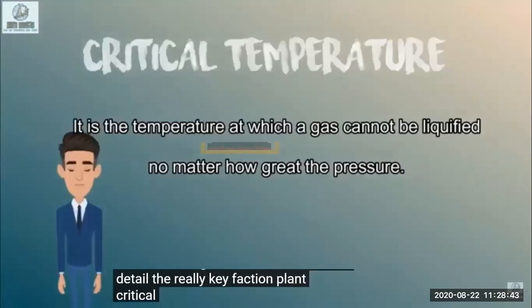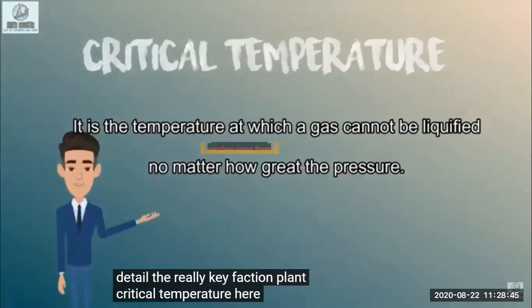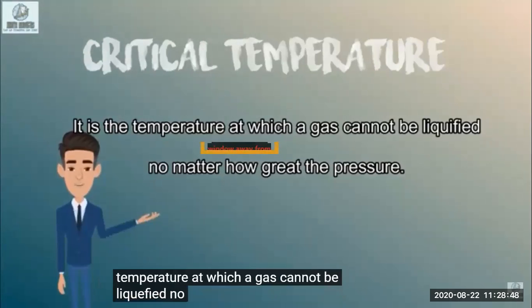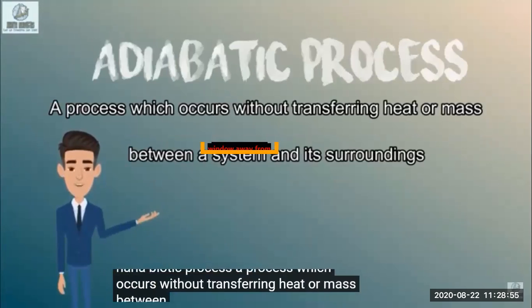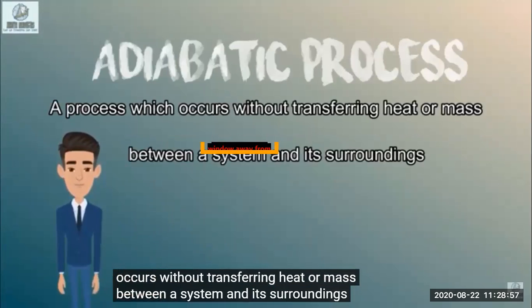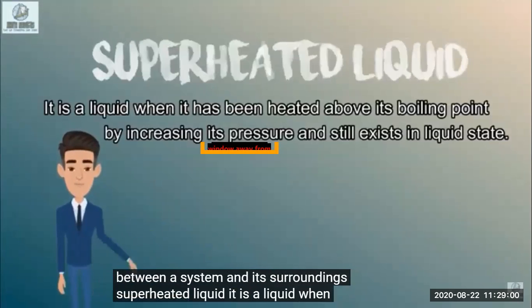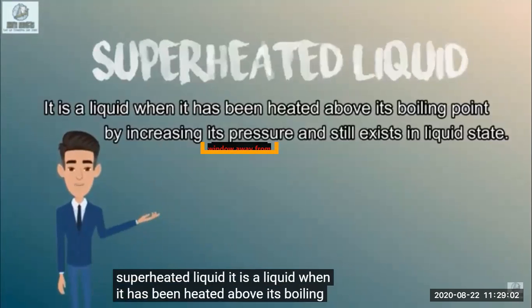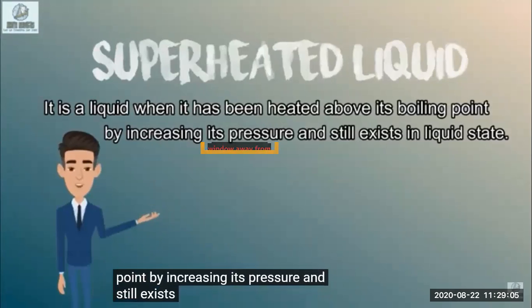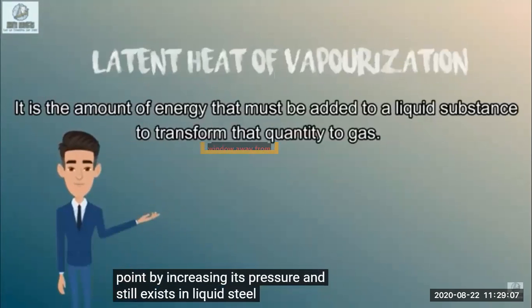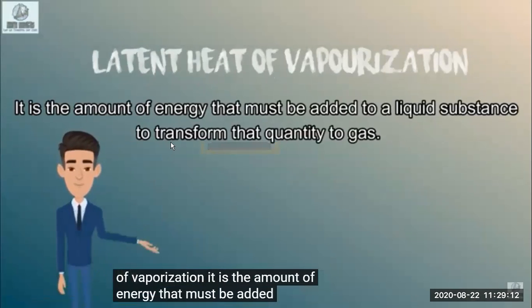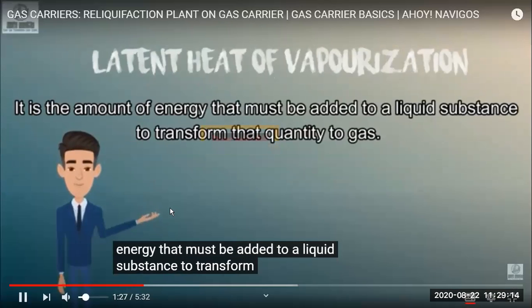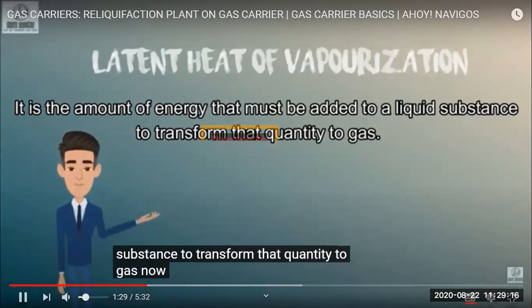Now let's discuss some important terms. Critical temperature is the temperature at which a gas cannot be liquefied no matter how great the pressure you apply. An adiabatic process is one which occurs without transferring heat or mass between a system and its surroundings. A superheated liquid is a liquid that has been heated above its boiling point by pressure and still exists in a liquid state. Latent heat of vaporization is the amount of energy that must be added to a liquid substance to transform that quantity into vapor.